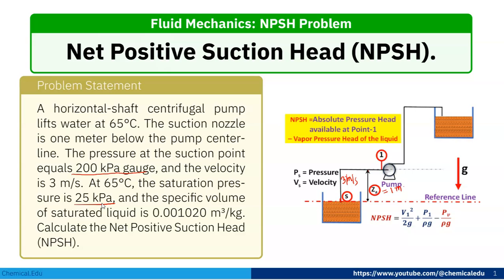We know that NPSH is nothing but at this point — at the suction of the pump — where the velocity is V1 and pressure is P1. So, NPSH will be V1 squared by 2g plus P1 by ρg minus Pv by ρg. PV is nothing but the vapor pressure.